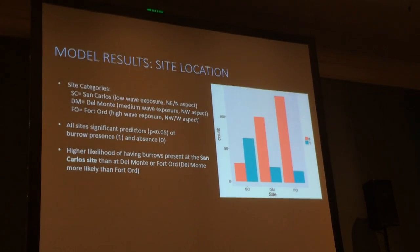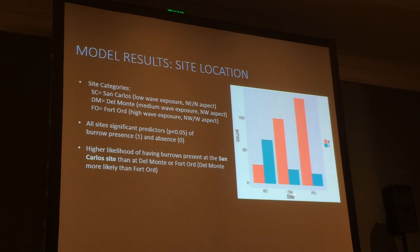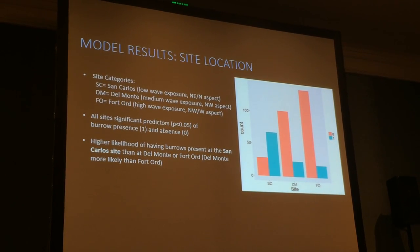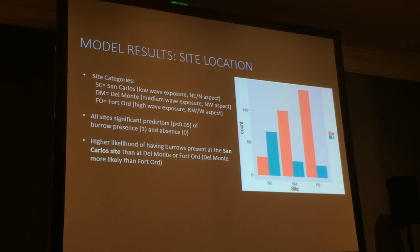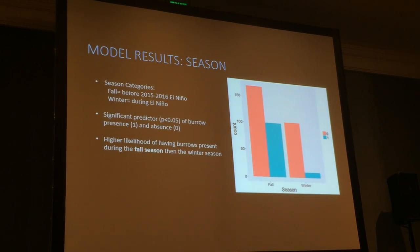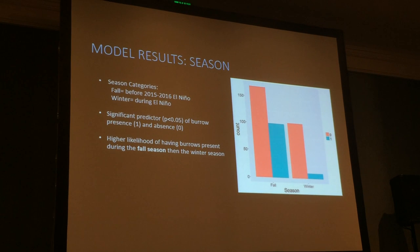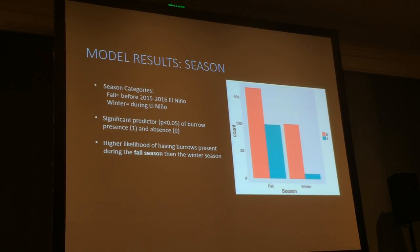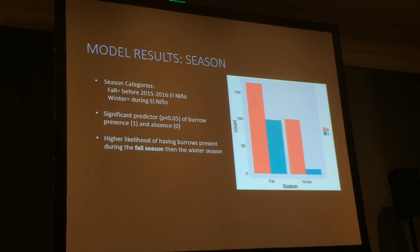Looking at site location, I have three sites ranging from low to high wave exposure. All sites were significant predictors of burrow presence and absence. There was a higher likelihood of burrows present at San Carlos, the low-exposure site, than at Del Monte or Fort Ord. Del Monte also had a higher count of burrow abundances than Fort Ord. For season, fall represented the before-El Niño period and winter the during-El Niño period. As expected, there was a higher likelihood of burrows present during the fall season than the winter, consistent with the GIS burrow density maps.